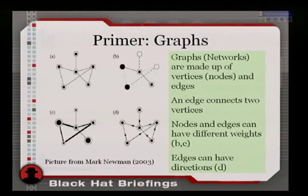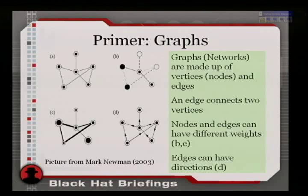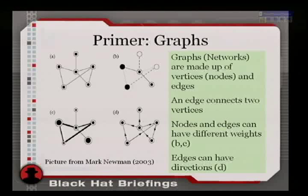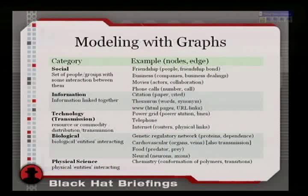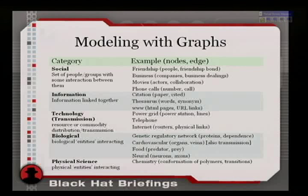A primer on graphs: what do you need to know? Essentially three, maybe four things: the nodes, the edges, and the fact that nodes can have weights and edges can have directions. This framework is so powerful that very many phenomena in real life can be modeled as graphs. I took a random sample of examples.